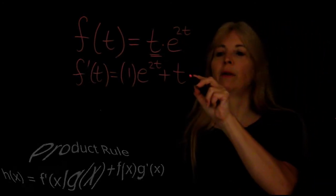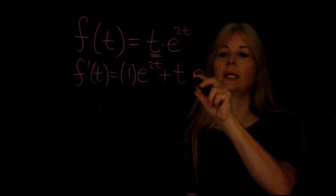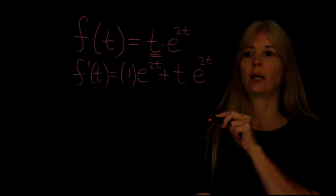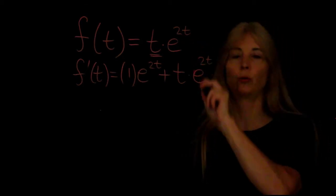Well remember the derivative of e to the anything is e to the anything times the derivative of the anything. What's the anything? 2t.